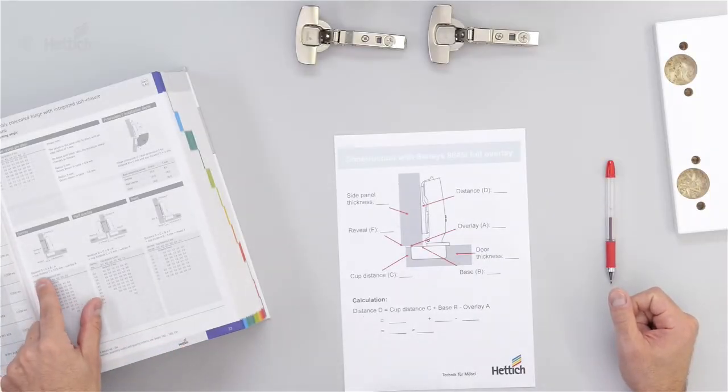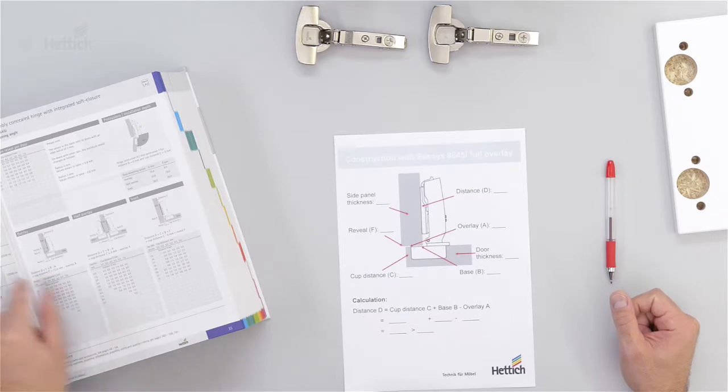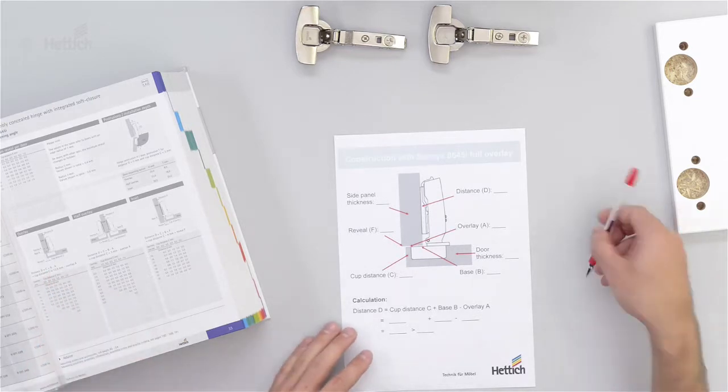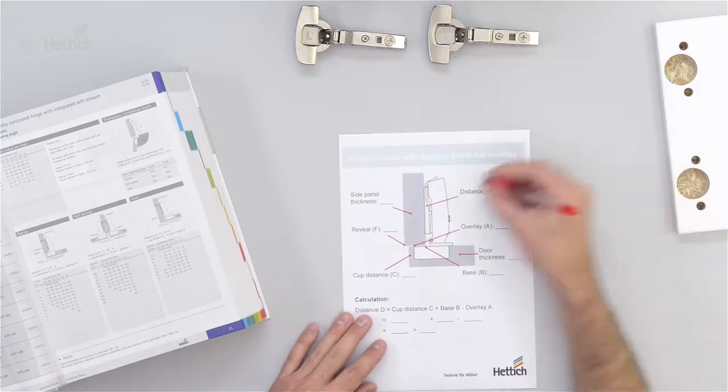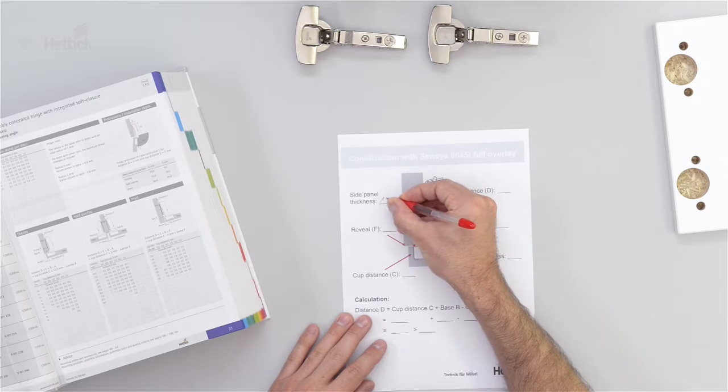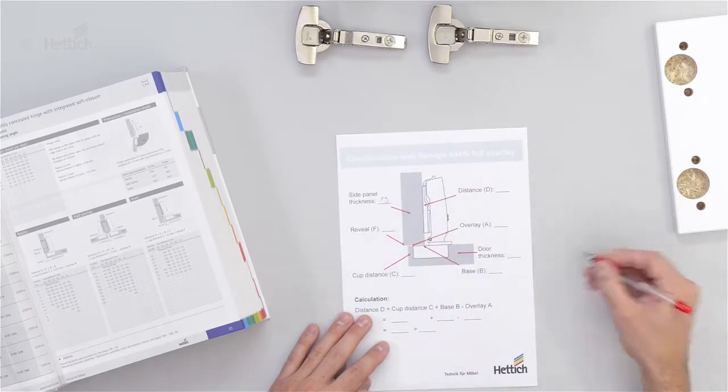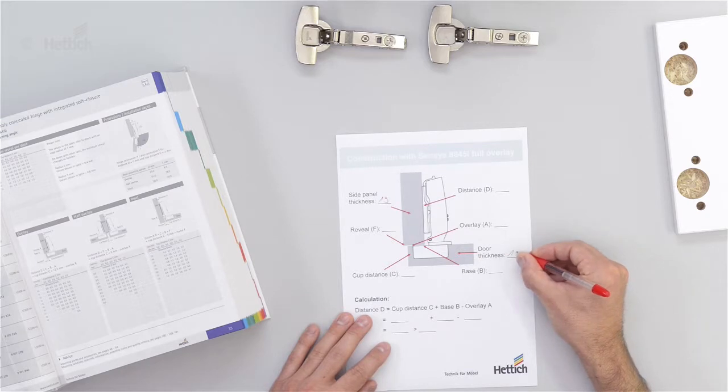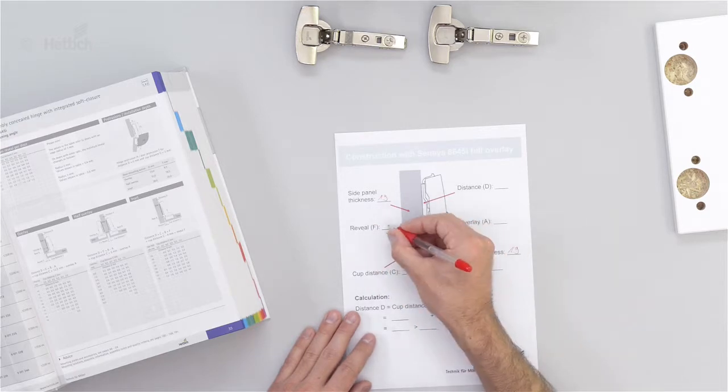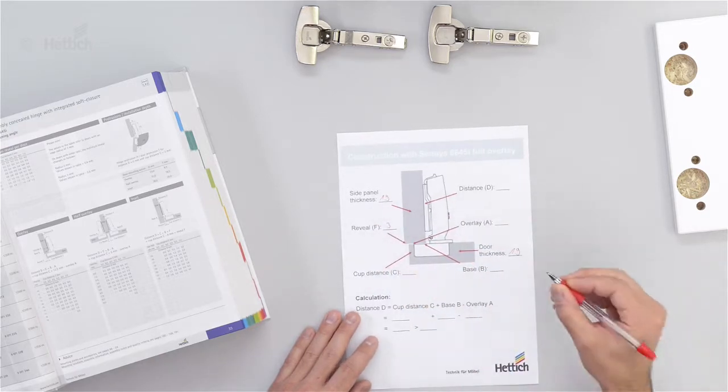The formula to calculate the mounting plate distance is here on the opposite side. Distance D equals C plus B minus A. In this example we calculate with a side panel thickness of 19 mm and a door thickness of also 19 mm and we say the reveal is 3 mm.